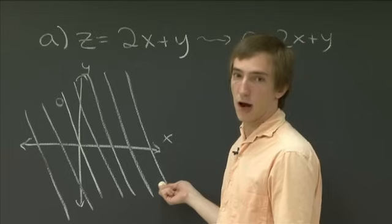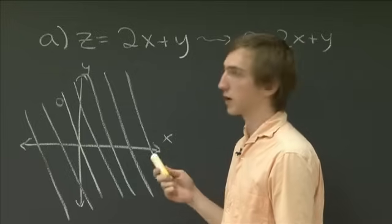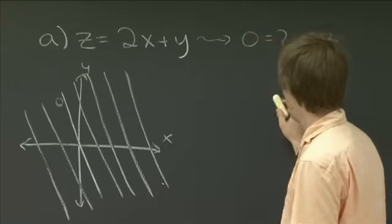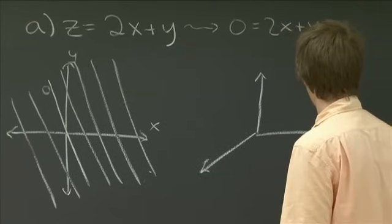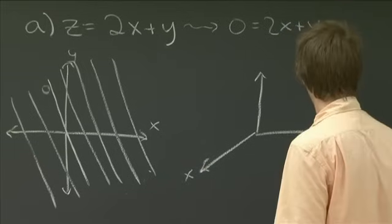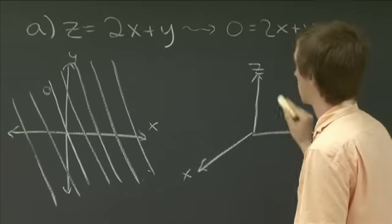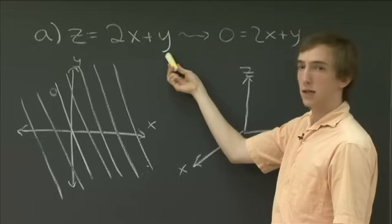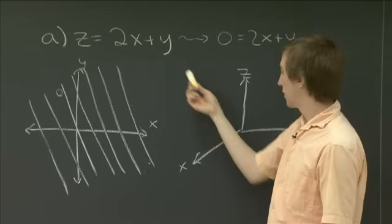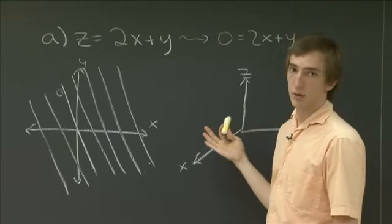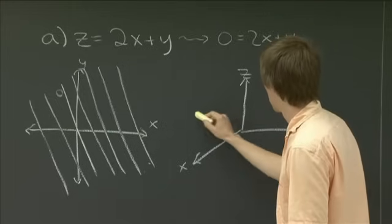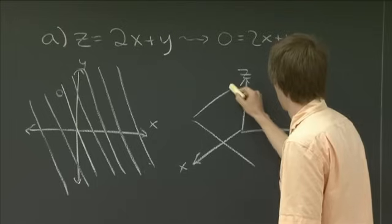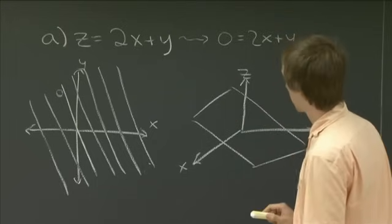So let's see if we can make some sense out of that by thinking about the graph in three dimensions of this function. So over here, I'm going to draw this function z equals 2x plus y. If we draw its graph, it's just a plane, right? So it's just a plane, which I'll just kind of draw in cartoon form. Something like that.